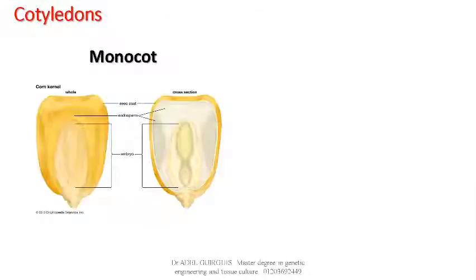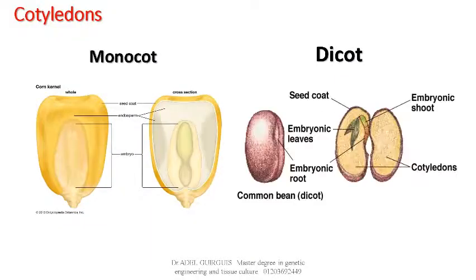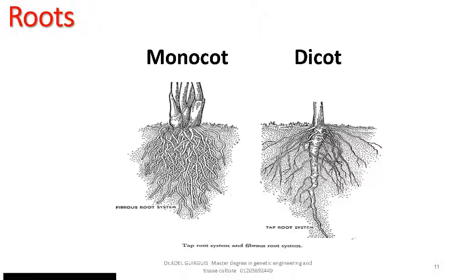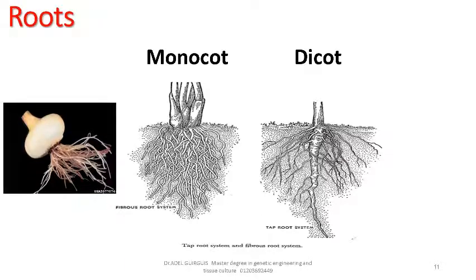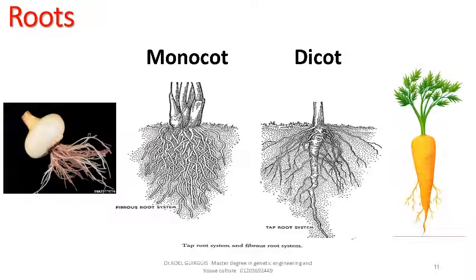Comparison between monocot and dicot. Number 1 — Cotyledon: in monocots, the seed is formed from one part called a cotyledon, e.g., maize, date, rice, and wheat. In dicots, the seed is formed from two cotyledons, e.g., beans and peas. Number 2 — Roots: monocots have fibrous roots (e.g., onion), while dicots have a tap root (e.g., carrot).